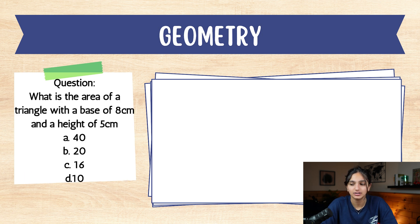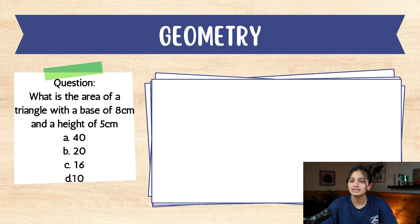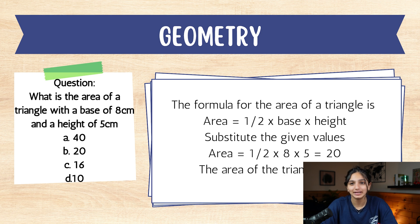Now for our third question about geometry. What is the area of a triangle with a base of 8 centimeters and a height of 5 centimeters? A. 40. B. 20. C. 16. D. 10. Take a minute to pause and see which answer you think is correct. If you said B, 20, you are correct. The formula for the area of a triangle is: Area = 1/2 × base × height. Substituting the given values: Area = 1/2 × 8 × 5 = 20. The area of the triangle is 20 cm².